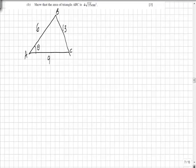In part B we have to prove that the area of the triangle is 4 root 35. The area of a non-right angle triangle is equal to a half AB sine C.